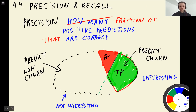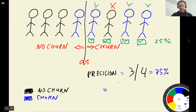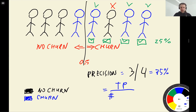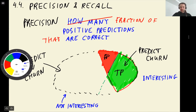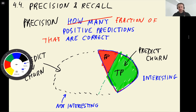The formula for computing precision is: we take the number of true positives — people we correctly identified as churning — and divide by the total number of positive predictions, which is true positive plus false positive. Because true positive plus false positive is the total number of customers we predicted as churning.